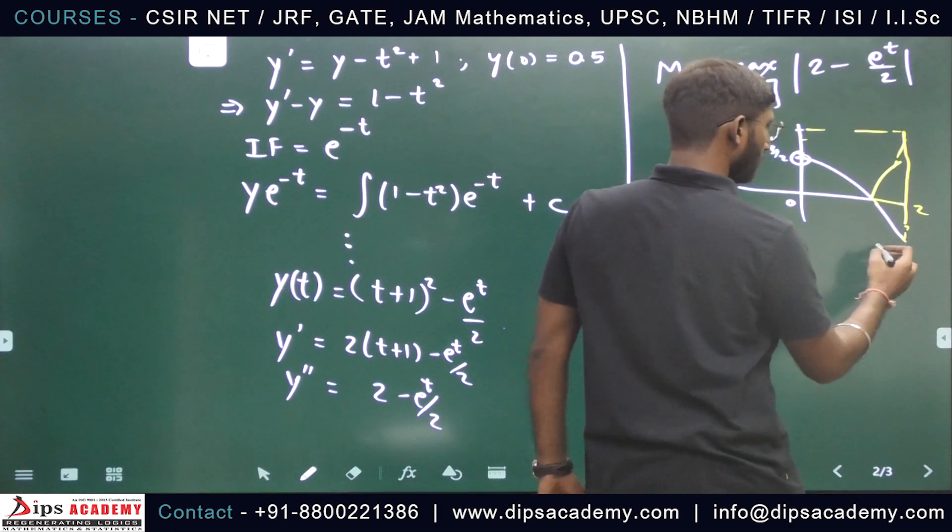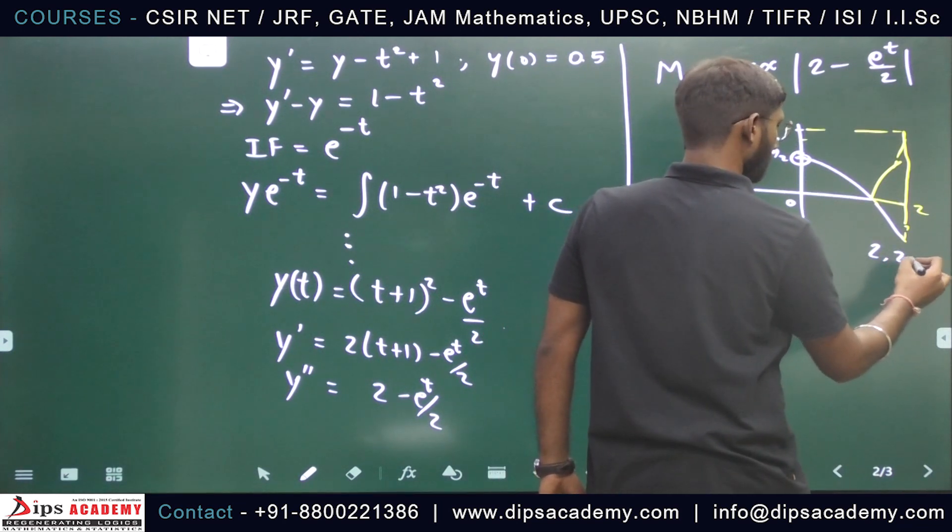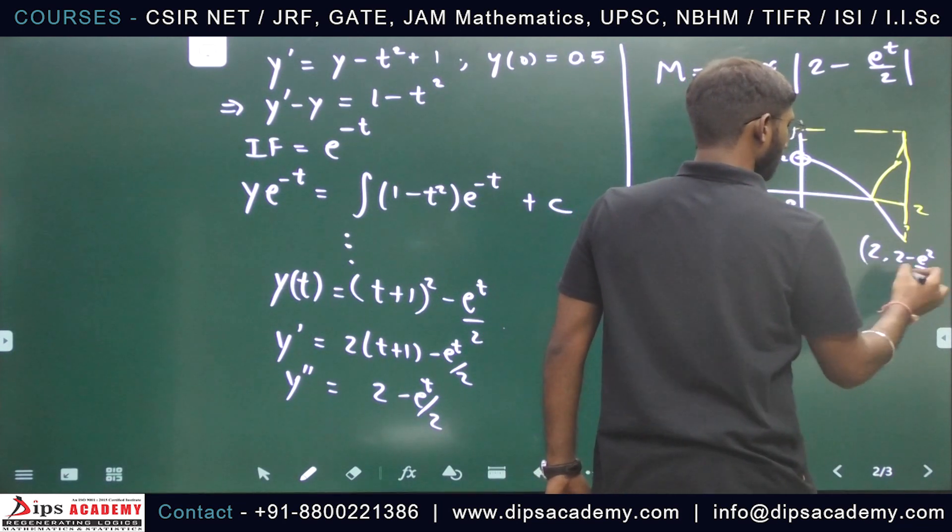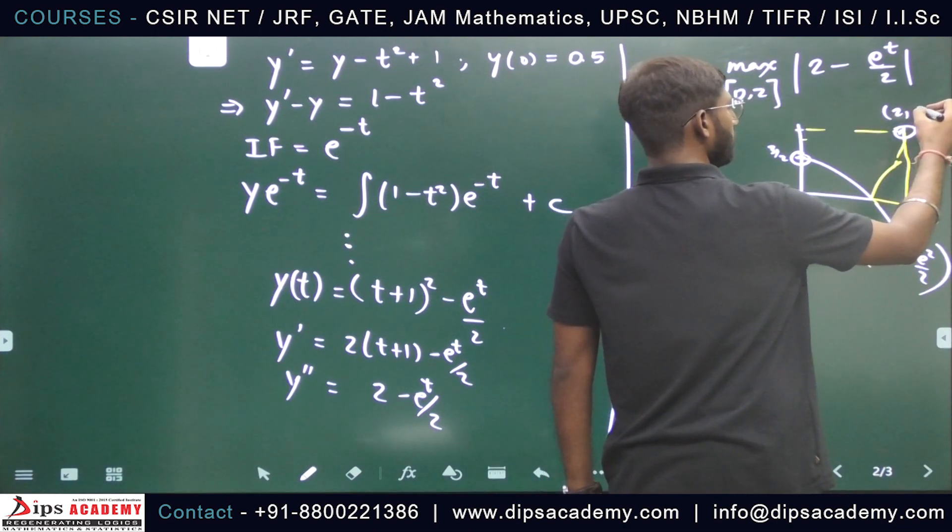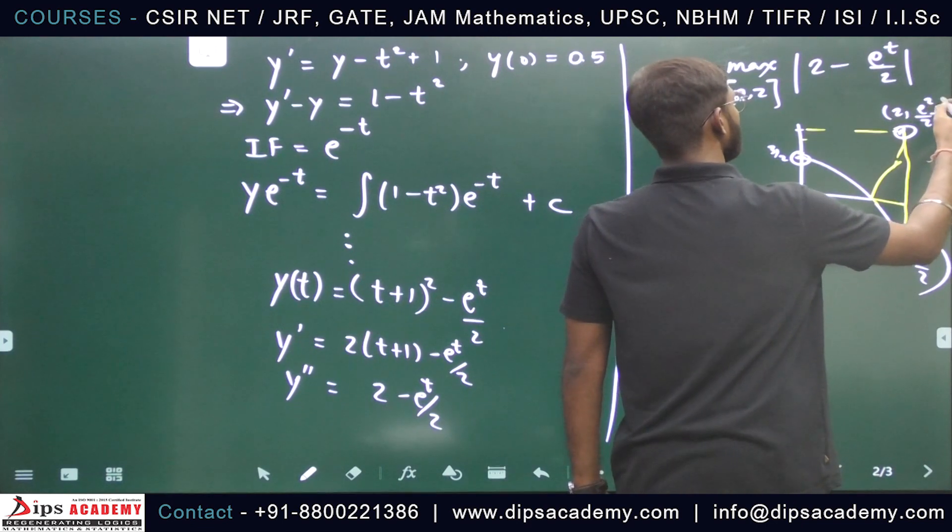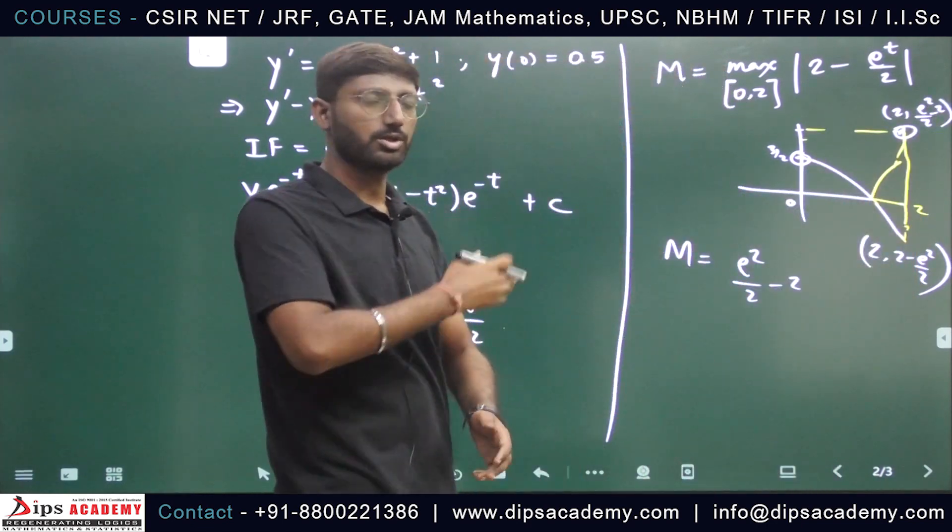So the value that came here will come up as positive. So the point was 2, 2 minus e squared by 2. When mod is applied, it becomes 2, e squared by 2 minus 2, because with mod the value becomes positive.